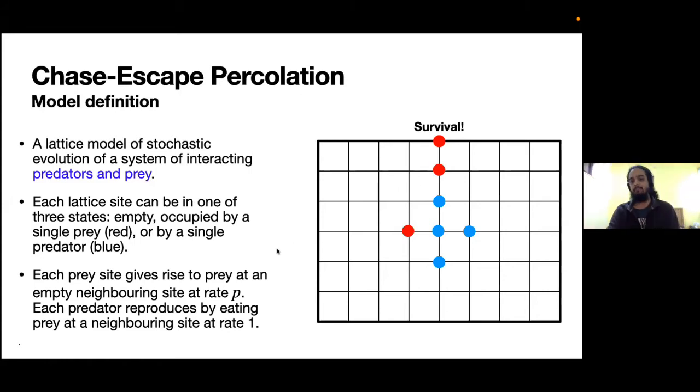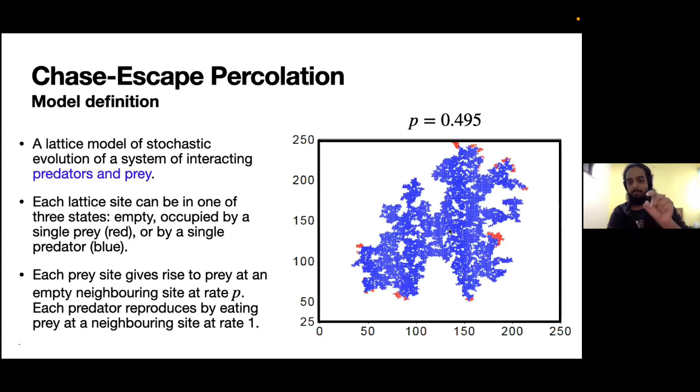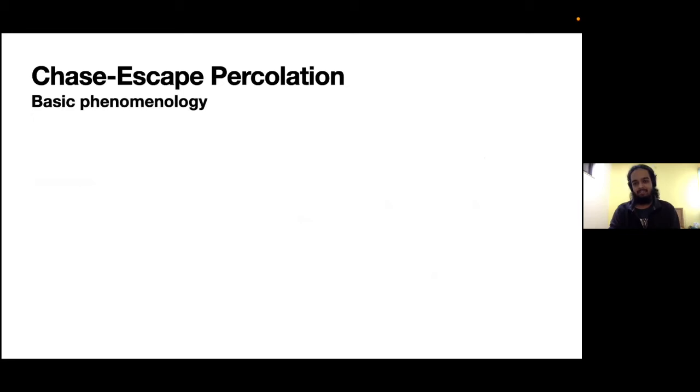From the same initial condition where one predator is surrounded by some prey, this is a snapshot of the simulation with p equal to 0.495 as mentioned here. As you see here, the prey managed to escape and we stopped the simulation.